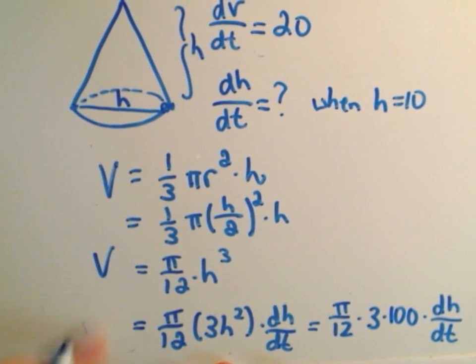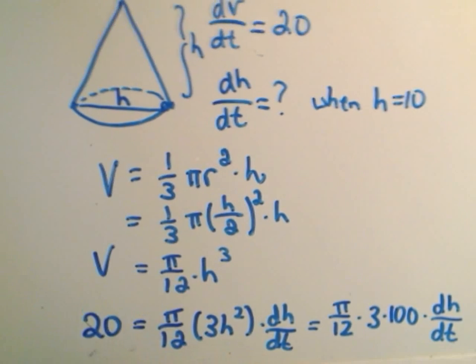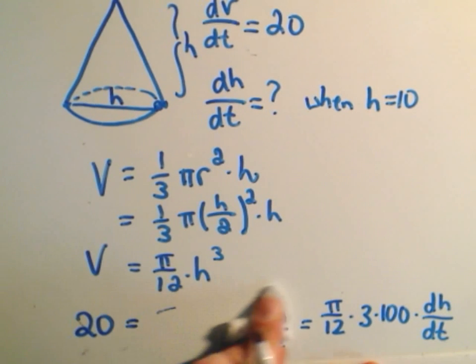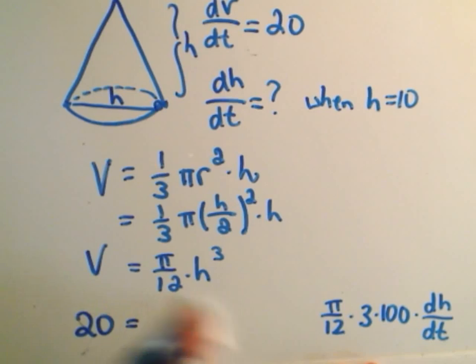We know what dV/dt is equal to. That's 20. So we just solve it.